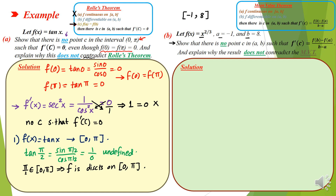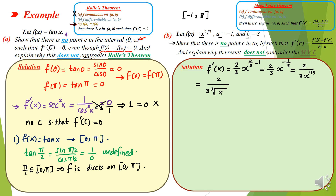First, we find f′(x). Using the power rule: f′(x) = (2/3)x^(2/3 − 1) = (2/3)x^(−1/3), which can be written as 2 / (3·∛x).